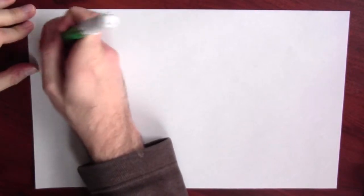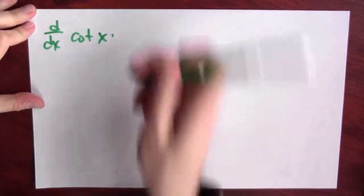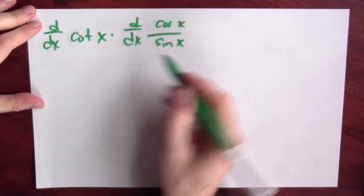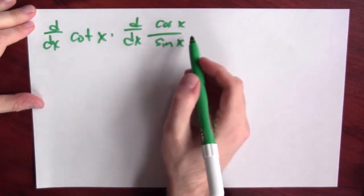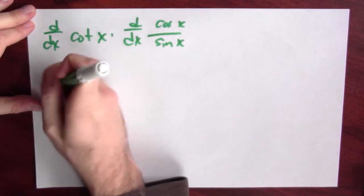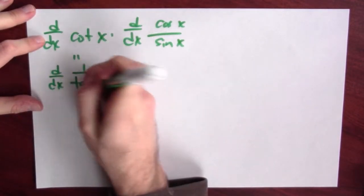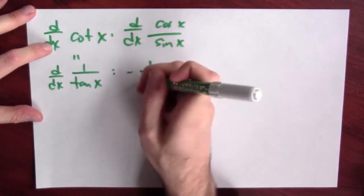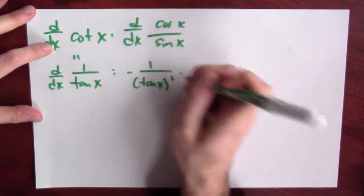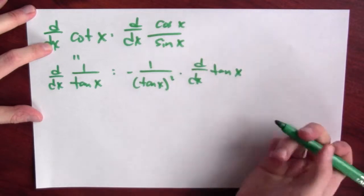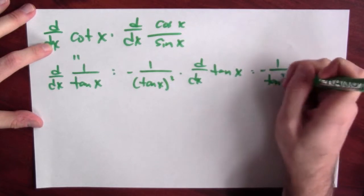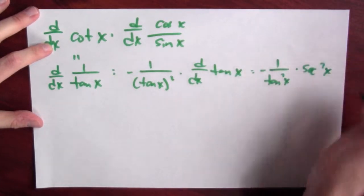We can complete the story by differentiating cotangent. One way is to write it as the derivative of cos(x)/sin(x) and apply the quotient rule. Or, we can use the fact that cot(x) = 1/tan(x) and apply the chain rule: the derivative of 1/tan(x) is -1/tan²(x) times the derivative of tan(x), which is sec²(x). So this is -sec²(x)/tan²(x).